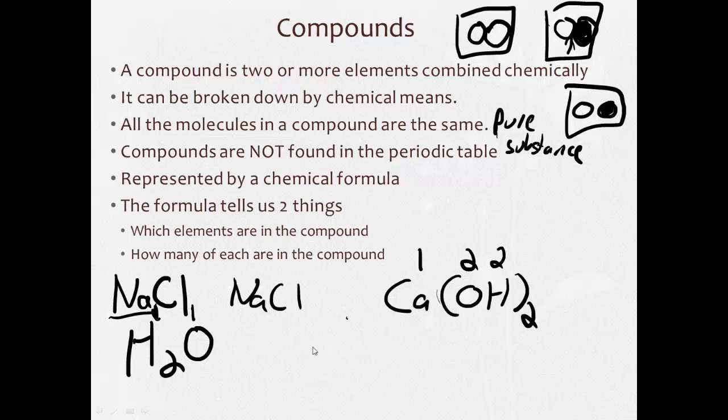And to get more complicated, Al2(SO4)3 tells us Al is aluminum, so there's two aluminums. We distribute this. There's three sulfurs. S is sulfur. Three times four, there are twelve oxygens. So formula has a good amount of information.